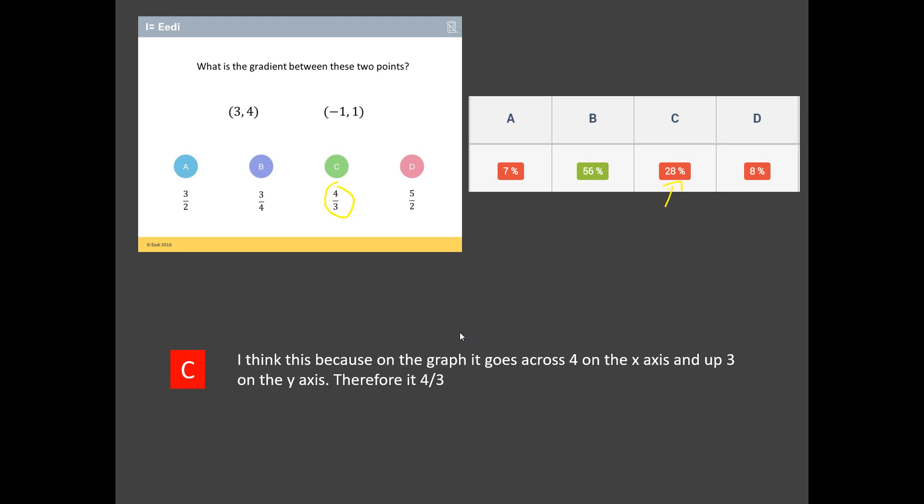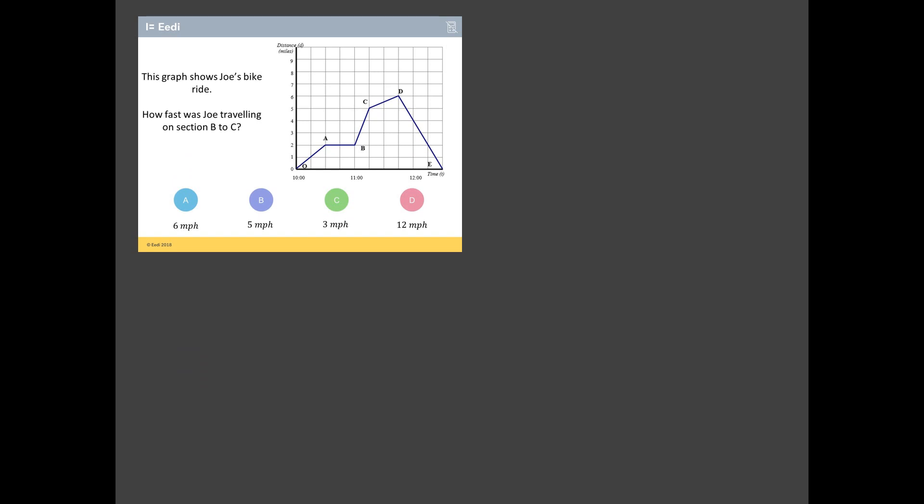OK, how did you get on with that one? Don't worry if you struggled. A tricky question. Let's now look at the second worst answered question. And it is this one here. OK, I like this one. I must admit. The graph shows Joe's bike ride. How fast? Now, that's going to be important. Let's get a little bit of a botch on that. How fast was Joe travelling on section B to C? Let's look at B to C. So, we've got a graph here. We've got distance going up here. And we've got time going across here.